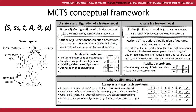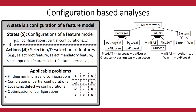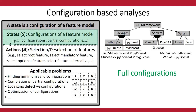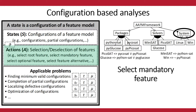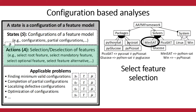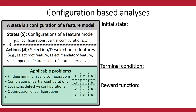We have identified several analysis problems that can be mapped to this framework, classified according to what the states represent. For analysis where a state represents a configuration of a feature model, the states may include partial or invalid configurations. The set of actions includes selecting or deselecting features in a defined order to always reach a valid configuration: select optional features, select feature alternatives, select a feature in an or-group, or select a random feature. The initial state, terminal condition, and reward function are specific to each particular problem.